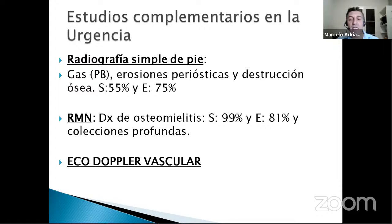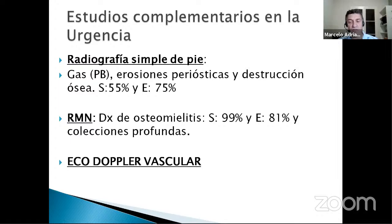La placa radiográfica es un estudio complementario rápido que puede mostrar gas en partes blandas, erosiones, destrucción o fracturas óseas, con sensibilidad del 55% y especificidad del 75%. Si tenemos resonador disponible, los parámetros de compromiso de pie colectado o compromiso óseo con signos de infección o edema óseo aumentan la sensibilidad y especificidad. El ecodoppler de urgencia nos ayuda para ver el tipo de circulación, cómo está el antepié y la circulación plantar por tibial anterior y posterior.